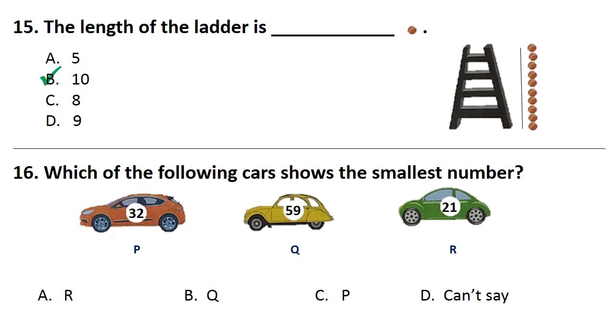Question No. 16. Which of the following cars shows the smallest number? Answer is Option A. That is R.